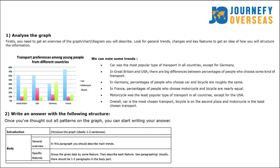Next is the IELTS writing examination. In writing, there are two tasks: Task 1 and Task 2. Task 2 is exactly the same for both IELTS Academic and IELTS General; the difference is in Task 1. In IELTS Academic writing Task 1, there is an image given — it could be a diagram, graph, pie chart, bar chart, flow chart, or any other image — along with a slight description. You need to understand, analyze, and describe the image in a minimum of 150 words within 20 minutes.